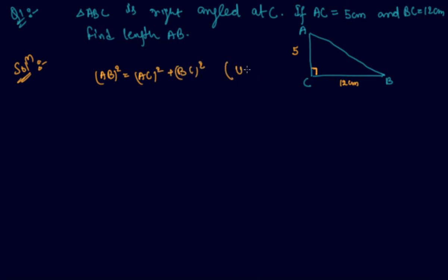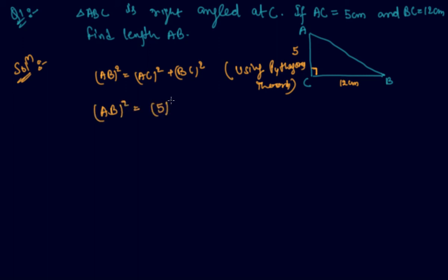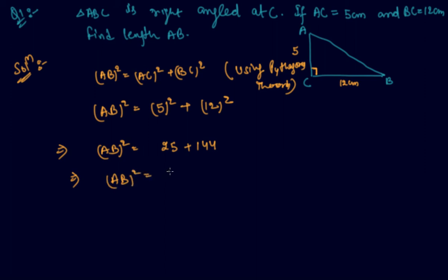Using the Pythagorean theorem, AB² = AC² + BC². Substituting the values: AB² = 25 + 144 = 169. Therefore AB = 13 cm.